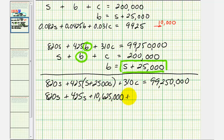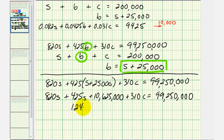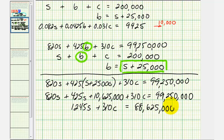Combining like terms and subtracting 10,625,000 from both sides gives us 1,245S plus 310C equals 88,625,000. This is one equation containing just S and C.